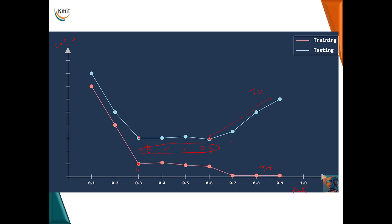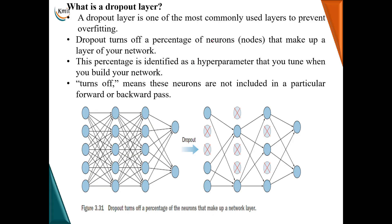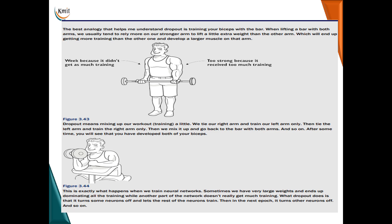To summarize: underfitting occurs when the model is trained on a small amount of data and cannot predict well on new data. Overfitting occurs when the model memorizes all the training data points. The dropout layer drops neurons from the hidden layers, with the percentage controlled by the hyperparameter rate. Turning off neurons means they are excluded during both the forward pass and the backward pass.